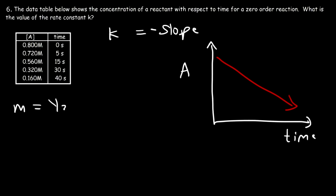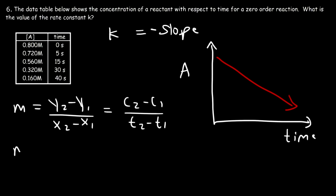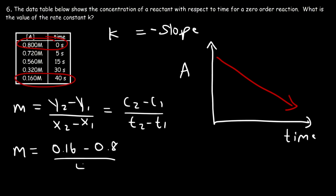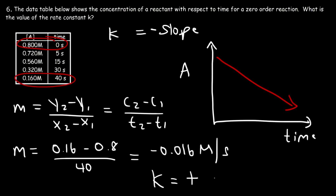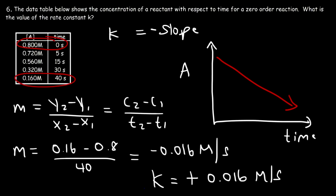Wait — recalculating: 0.16 minus 0.8 is negative 0.64 divided by 40 equals negative 0.016 M per second as the slope. So K is positive 0.016 M per second. Remember: the slope is negative K, and K is always a positive number. Problem 7: What is the half-life for a reaction with rate constant K of 0.0045 seconds to the minus one? The units S to the minus one with no molarity indicate a first order reaction.